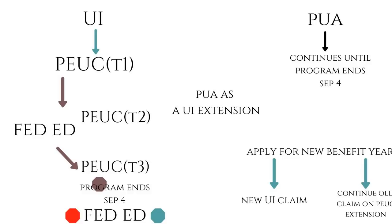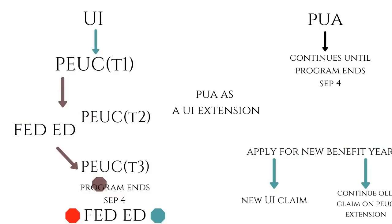Once you have exhausted all of your UI, you then move on to a PEUC extension. If your PEUC extension ended before the next stimulus bill's extension kicked into action, then you may have been placed into Fed Ed. Fed Ed would continue for up to 20 weeks. For those of you currently in Fed Ed, you must exhaust all of your Fed Ed weeks before you are allowed to move back into the PEUC extension. Once your Fed Ed weeks are exhausted, you will be allowed to use those PEUC weeks up until claim week ending September 4.